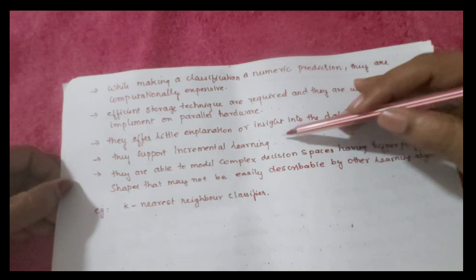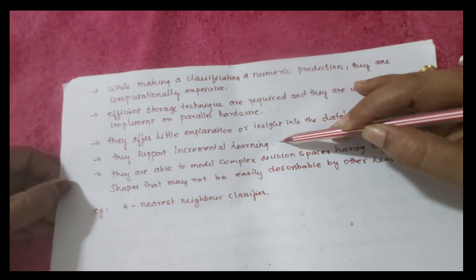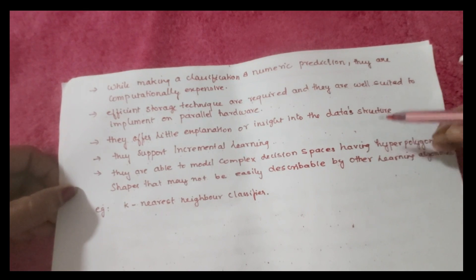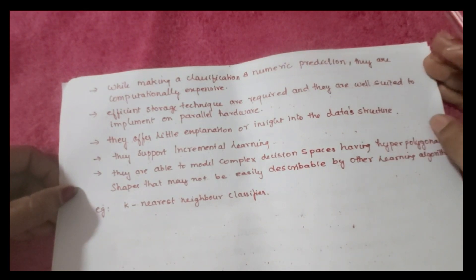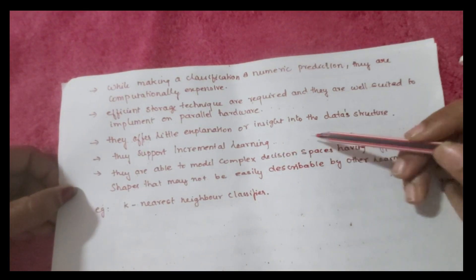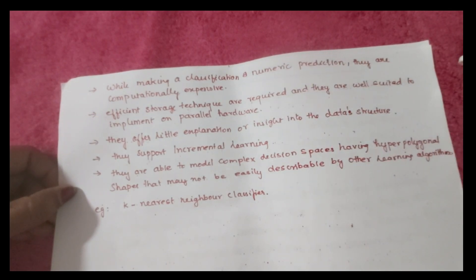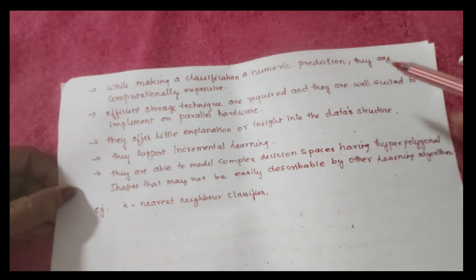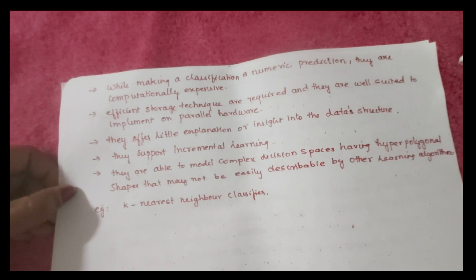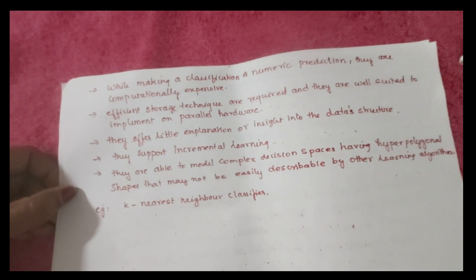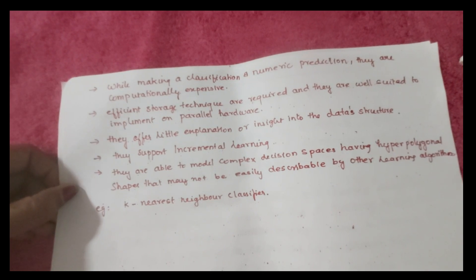Lazy learners support incremental training. Their most important advantage is that they are able to model complex decision spaces having hyper-polygonal shapes that may not be easily described by any other learning method. This property is present in complex decision spaces. One example of a lazy learner is the k-nearest neighbor classifier.